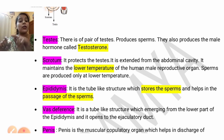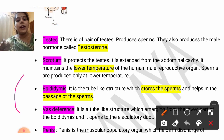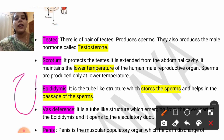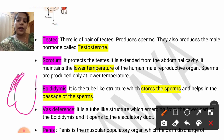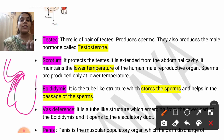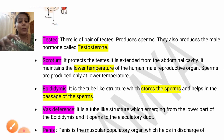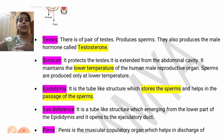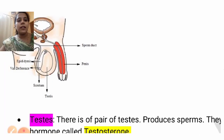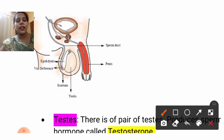Just above the epididymis there is a coil-like structure. This coil-like structure is the extension of the vas deferens. The vas deferens is a tube-like structure emerging from the lower part of the epididymis, and it will send the sperms to the ejaculatory duct. From the ejaculatory duct the sperms will enter and come out.